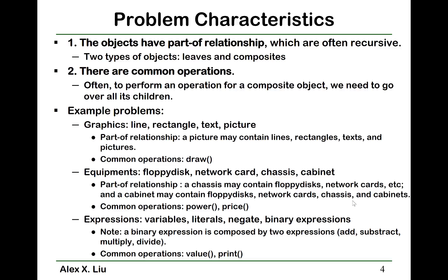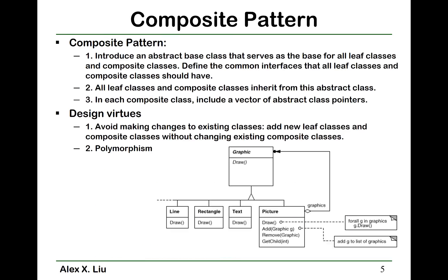Another example is expressions. We have variables, literals, negative, and binary expressions. The part-of relationship here is that a binary expression is composed of two expressions, and the two expressions can be add, subtract, multiply, or divide. There are common operations — for example, calculating the value of this expression or printing it out. To deal with problems with such part-of relationships and common operations, the design pattern for this is called composite pattern.